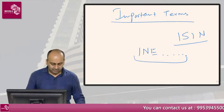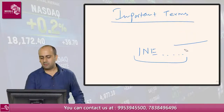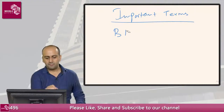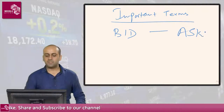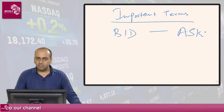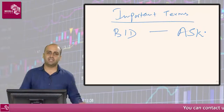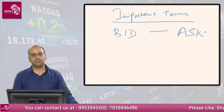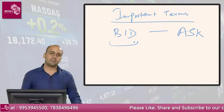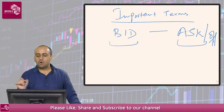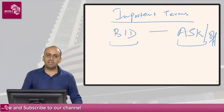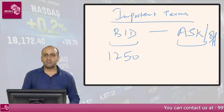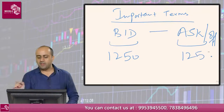The next term to understand is bid price and ask price. Have you ever seen an auction? In an auction, you bid for something you want to buy. Similarly in the stock market, the bid price is the price at which you want to buy, and the ask price or offer price is the price at which you want to sell. For example, if you want to buy a Reliance Industries stock at 1250, you are bidding for it, and if I want to sell this stock to you at 1251, that is called the ask price.